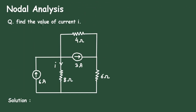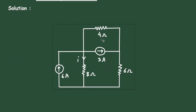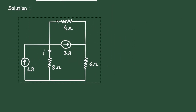Solution. First of all, let's copy this circuit. Now let's say this is node 1 with voltage V1, and let's say this is node 2 with voltage V2, and this is the reference node.